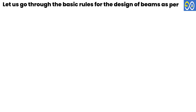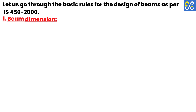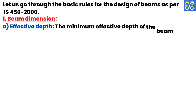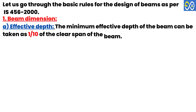Let us go through the basic rules for the design of beams as per IS 456-2000. The first rule covers beam dimensions. The minimum effective depth of the beam can be taken as 1/10 of the clear span of the beam.